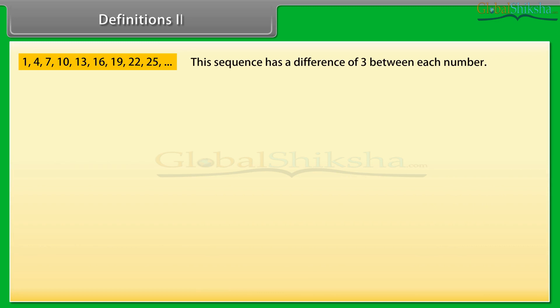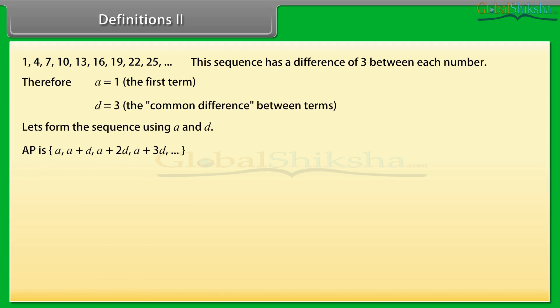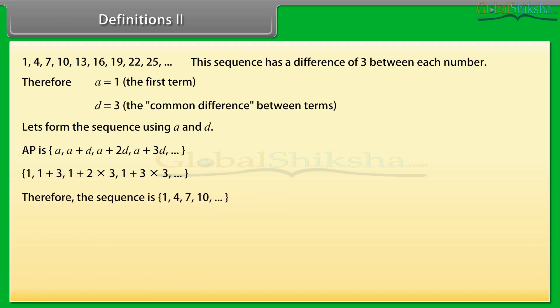Look at this example. We can see that this sequence has a difference of 3 between each number. Therefore a is equal to 1 (the first term) and d is equal to 3 (the common difference). We know AP is written as: a, a+d, a+2d, a+3d, and so on. Substituting the values of a and d we get: 1, 1+3, 1+2×3, 1+3×3, and so on, which gives the sequence 1, 4, 7, 10, and so on.